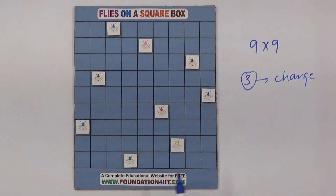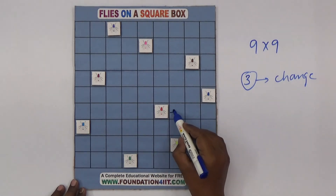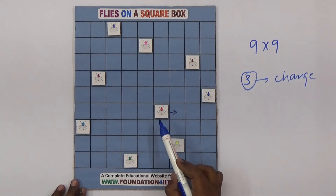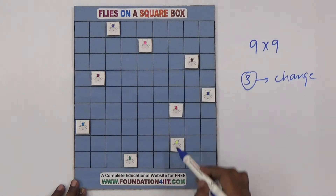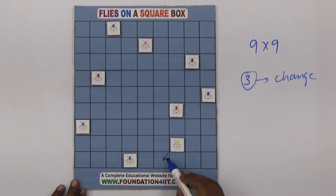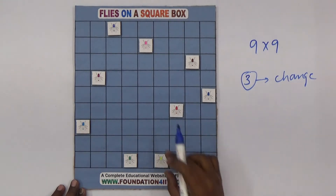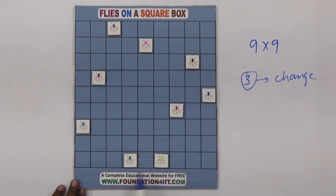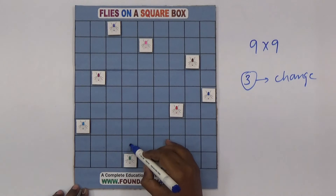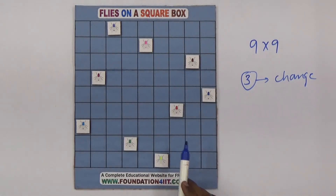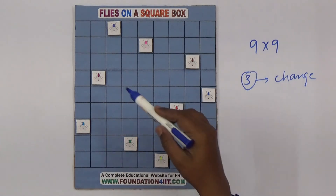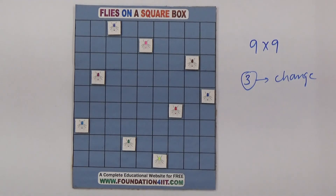Now let me change three flies' positions. I'm taking this fly and shifting it to the right side — but if I move it to the next position it interacts with another, so I'm taking it down. Now this one is connecting with another in this row, so I'm moving it off to the side. These three flies have now changed their positions, and even so, no fly coincides with another in rows, columns, or diagonal.